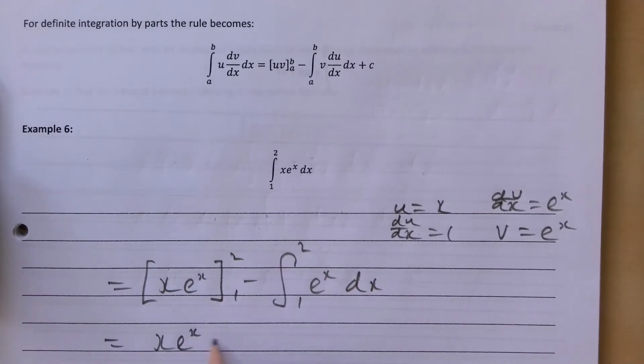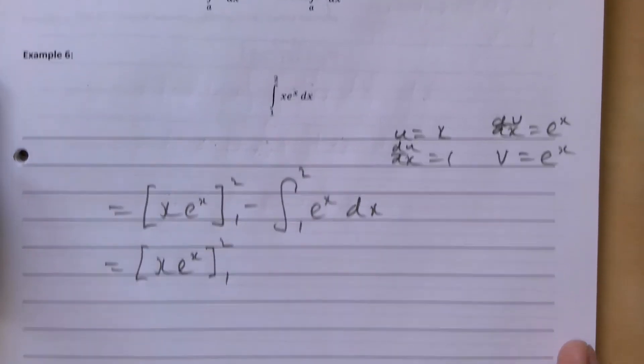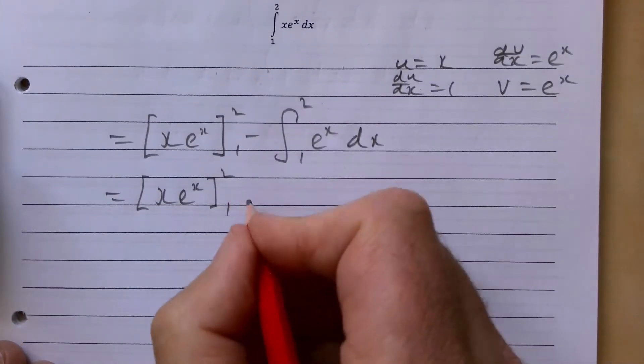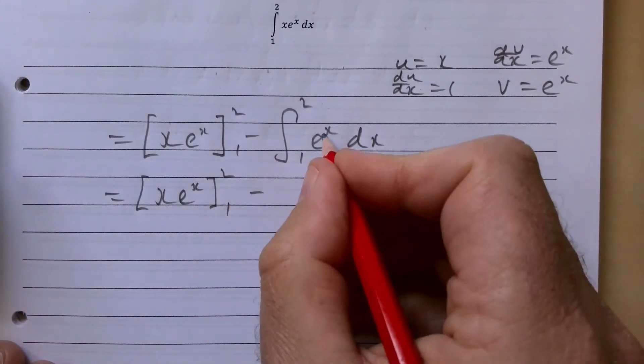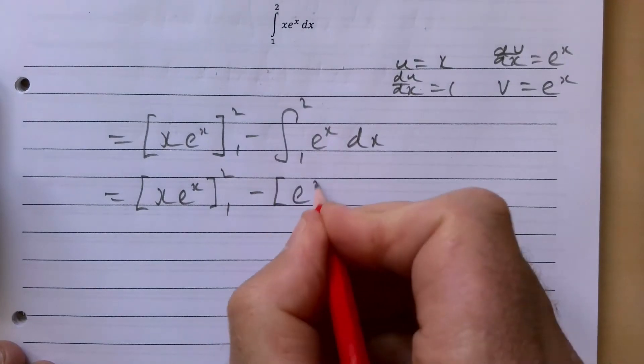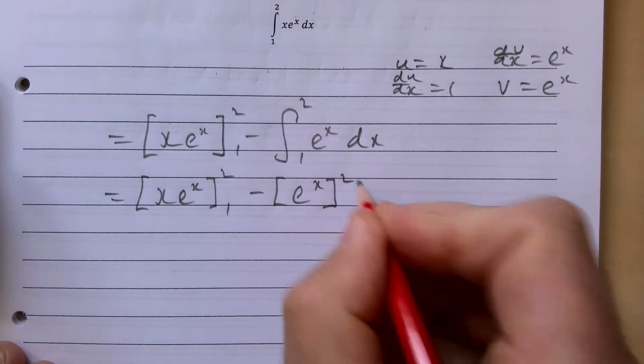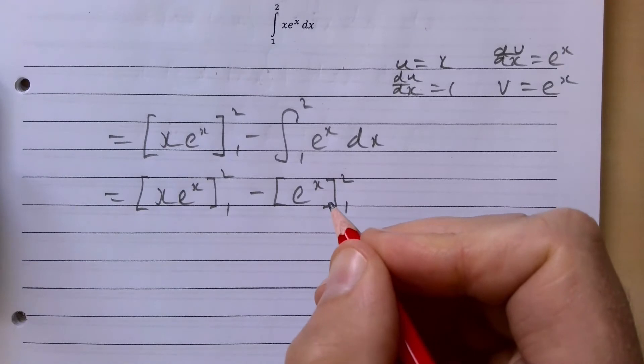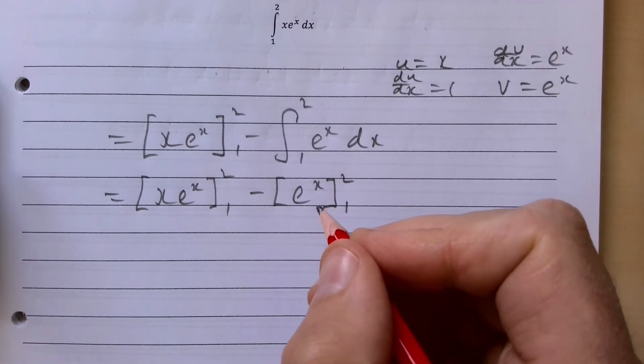So again we end up with x e to the x between 2 and 1. We've moved up here slightly so we can continue to see, hopefully that's okay. Take away integrating e to the x of course just gives e to the x again between 2 and 1, and no plus c required whenever it's definite integration of course.